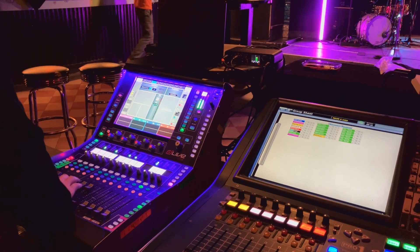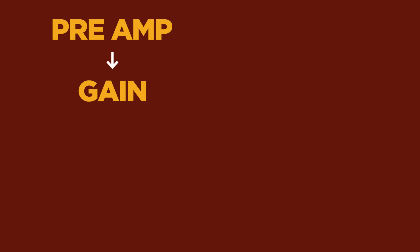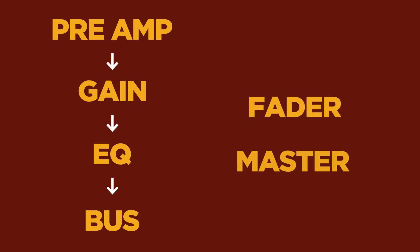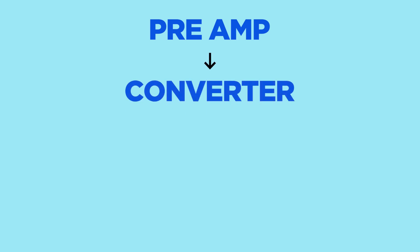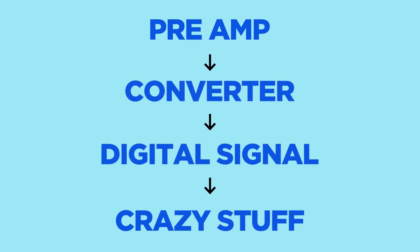We've got our microphone and we plug it into the back of the mixer — we've made a physical connection. On an analog mixer, it goes into the preamp, we turn the gain up, it goes into the EQ, then through the bus section to the fader and eventually to the master. On the digital mixer, it still goes directly to the preamp first, and then after the preamp it goes straight into a converter where it's converted to digital — and this is where the routing responsibility begins.